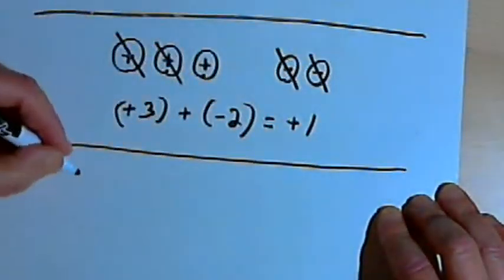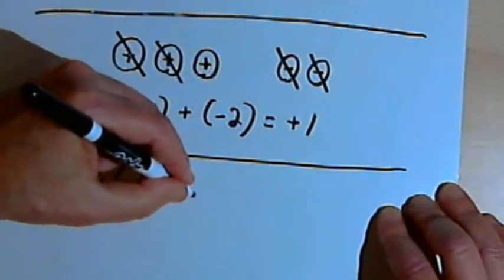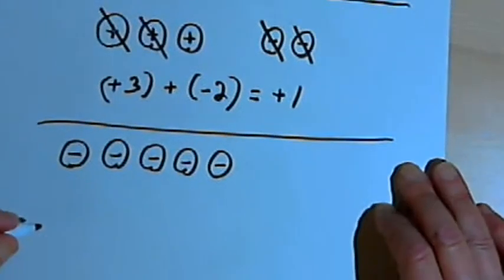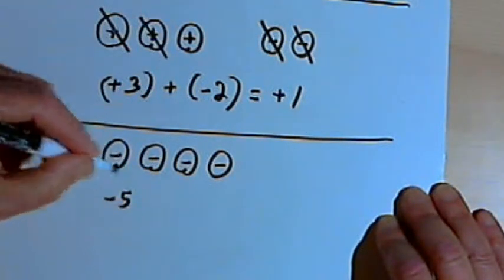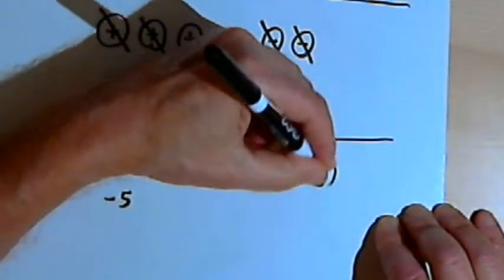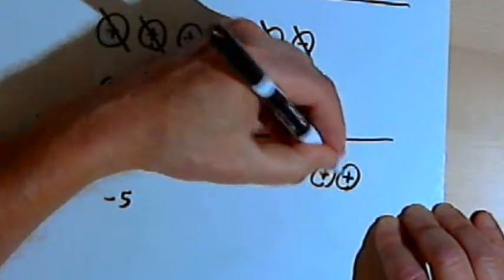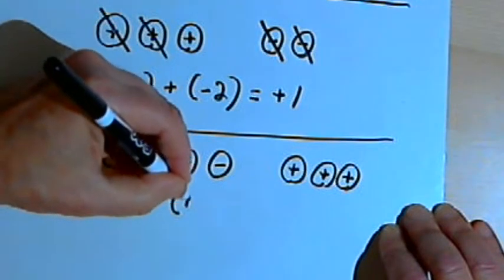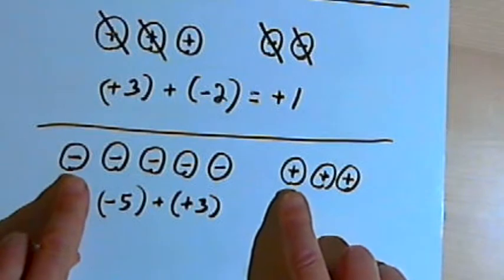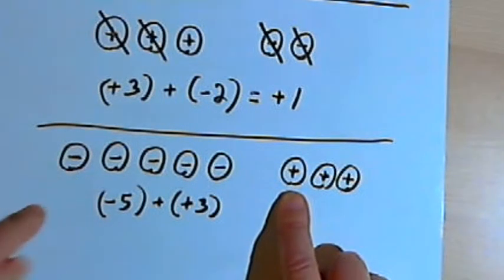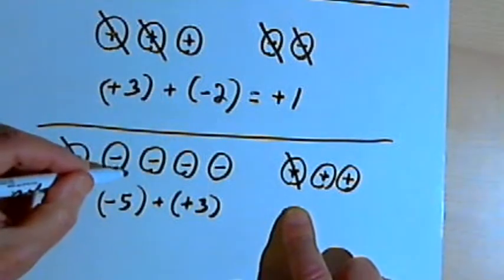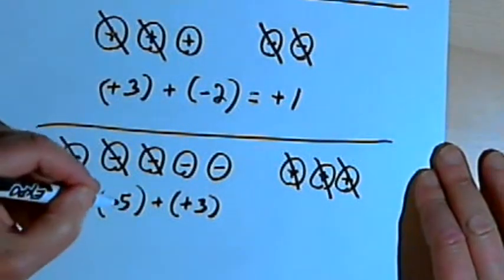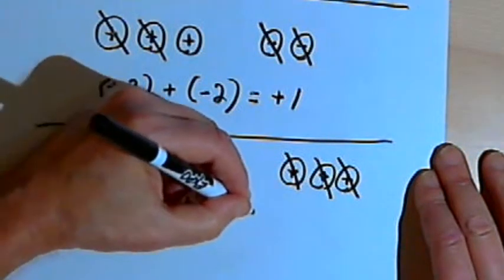Let's try this one more time. In the first round I do horribly — I have 5 negative chips, so I've got negative 5. Then in the second round I do a bit better — I have 3 positive chips. So I want to add negative 5 plus positive 3. By looking at the chips and canceling out pairs of positive and negative, I cross out three pairs and end up with two negative chips. So negative 5 plus positive 3 equals negative 2.